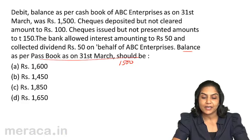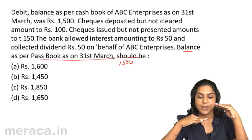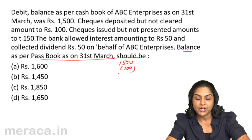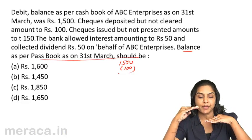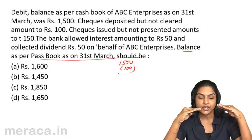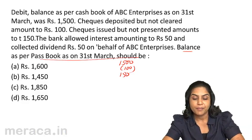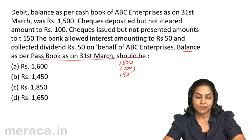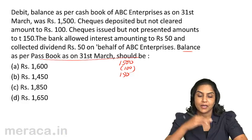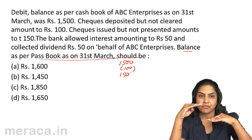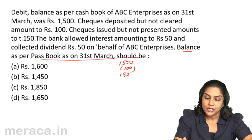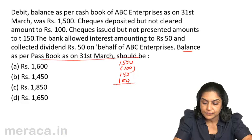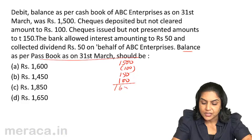Checks have been deposited but have not been cleared — so from the cash book balance we will deduct. Checks issued but not presented amounts to rupees 150. Since checks are issued but not presented, starting from the cash book to the pass book we will add 150. The bank allowed interest amounting to rupees 60 and collected dividend of rupees 50 — money has come into the bank. So we add 60 and 50, which gives 100, and the balance as per pass book would therefore be 1650.